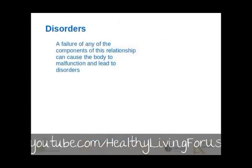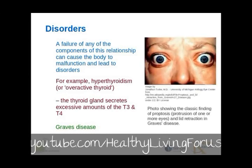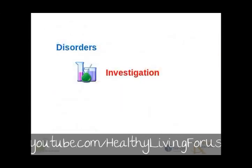Let's look at disorders. A failure of any of the components of this relationship can cause the body to malfunction and lead to disorders. For example, hyperthyroidism, or overactive thyroid, happens when the thyroid gland produces and secretes excessive amounts of free thyroid hormones, T3 and T4. One example of hyperthyroidism is Graves' disease. Patients suffer from a number of physical and psychological symptoms, and sometimes they are quite severe. One visible manifestation often seen with Graves' disease is the classic protrusion of the eyes, or proptosis. As you are going to be doing an investigation to research disorders caused by under- and over-secretion of at least one hormone, with different learners researching different hormones, we won't cover any more disorders here. We look forward to seeing what you come up with in your investigation.